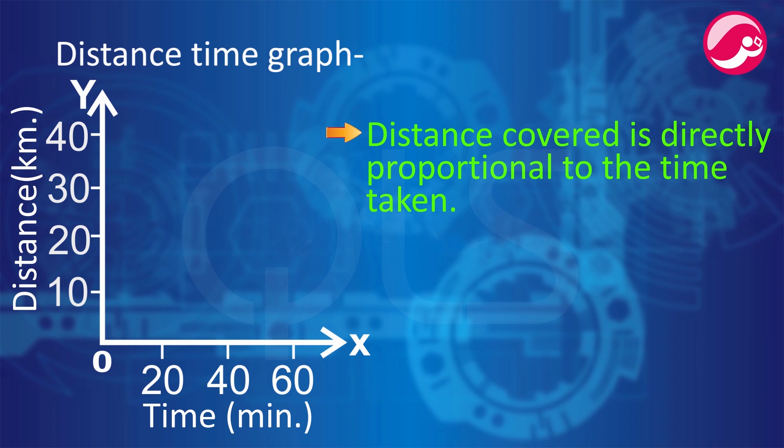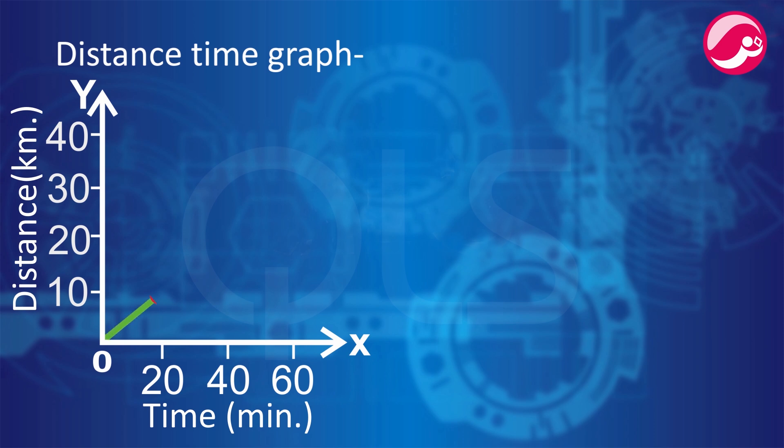If any object is moving at uniform speed, meaning as time increases, distance also increases, then in our graph there will be a straight line representation. Now let's see, if we get a straight line graph, that is it is having a uniform speed, then how will we calculate the speed?